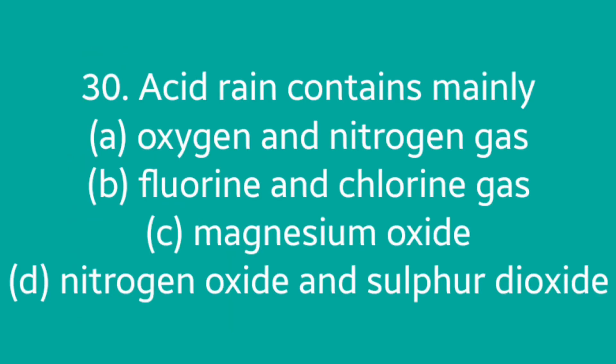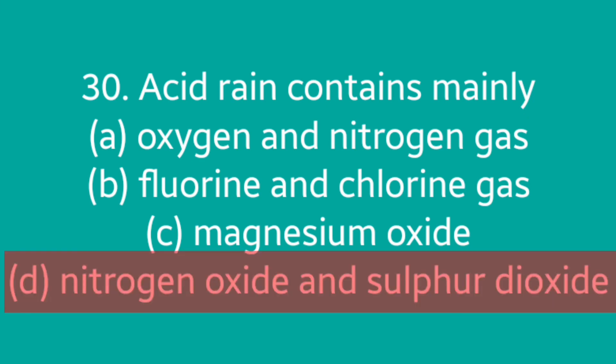Question number 30: Acid rain contains mainly — Oxygen and nitrogen gas, Fluorine and chlorine gas, Magnesium oxide, or Nitrogen oxide and sulfur dioxide? Answer is option D: Nitrogen oxide and sulfur dioxide.